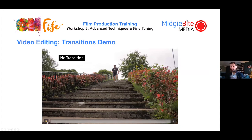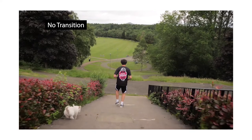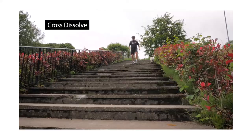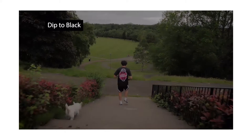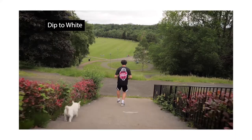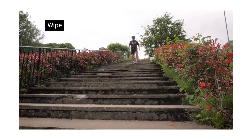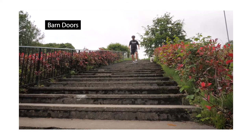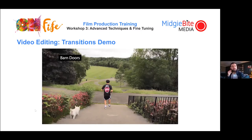Here's a demo of some common transitions — no transition, then cross dissolve, dip to black, dip to white, wipe, and barn doors. You can see how all of them have very different effects and impacts. The most common is cross dissolve, which can imply the passage of time. You might also want to fade up from black — a lot of films start and end that way. It's about finding the way you want footage to move from one bit to the next.